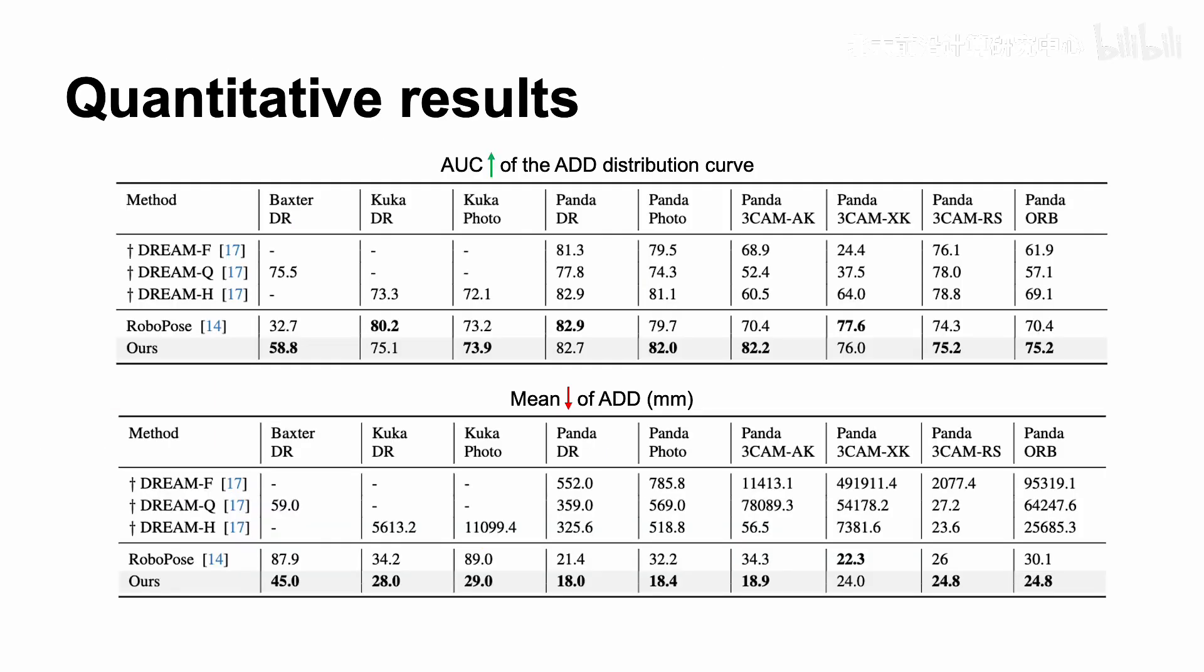We compare our method to the previous state-of-the-art RoboPose in the context of unknown joint holistic estimation. Our quantitative results show that our method achieves state-of-the-art performance. We evaluate performance using the ADD metric, which measures the average distance between estimated and ground-truth locations of robot keypoints. Our method generally shows better performance in terms of both the AUC of the ADD distribution curve and the mean value of ADD. We also included the method DREAM as a reference, which uses ground-truth joint state parameters as additional input.